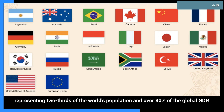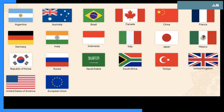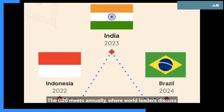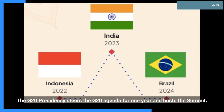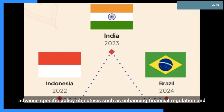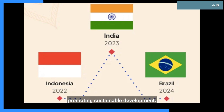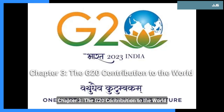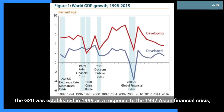The G20's membership includes developed and emerging market economies, representing two-thirds of the world's population and over 80 percent of the global GDP. The G20 meets annually, where world leaders discuss and coordinate pressing global issues. The G20 presidency steers the agenda for one year and hosts the summit. The G20 has also established several working groups and task forces to advance specific policy objectives, such as enhancing financial regulation and promoting sustainable development.